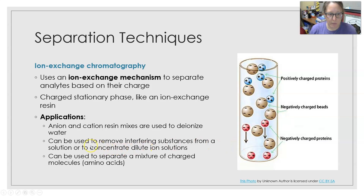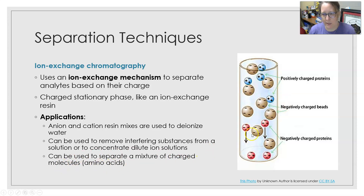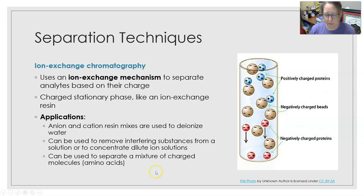Ion exchange chromatography can also be used to remove interfering substances from a solution or to concentrate dilute ion solutions. It can separate a mixture of charged molecules such as amino acids — negatively charged resin beads pull out the positively charged amino acid proteins, while the negatively charged ones flow out of the column.